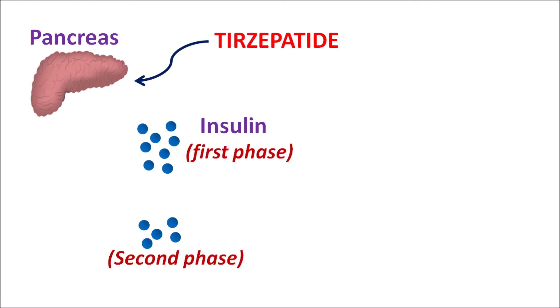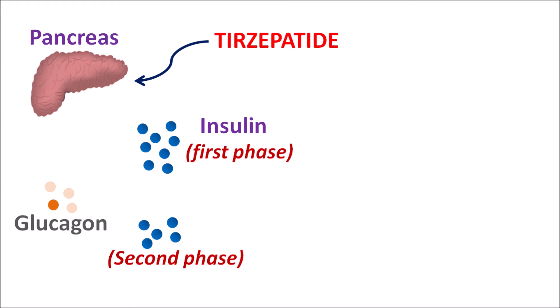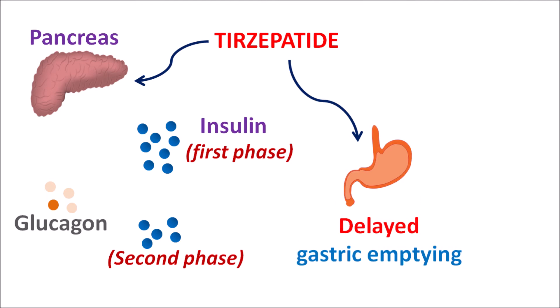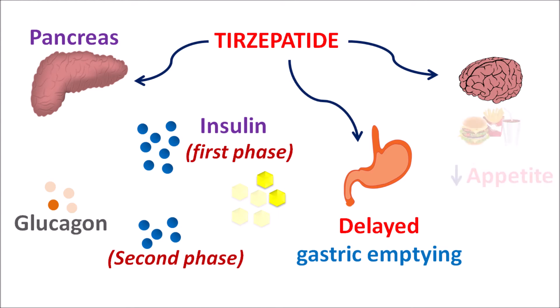Tirzepatide can increase both the first and second phase insulin secretion, thereby controlling the elevation of post-prandial glucose. After food intake, this drug can also act on the pancreas to reduce glucagon secretion, by which it further controls glucose levels. Apart from this action, the drug can also produce delayed gastric emptying, thereby reducing glucose absorption. Post-prandial glucose levels are reduced, and finally, this drug can act on the appetite centers within the CNS to reduce appetite, leading to decreased food intake.